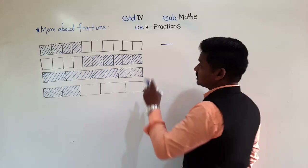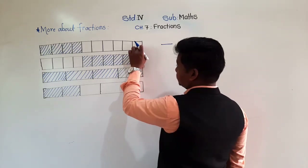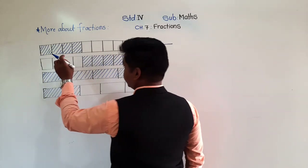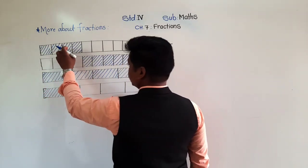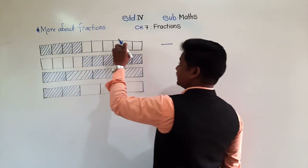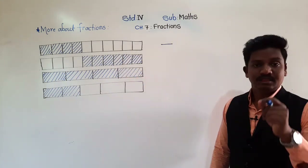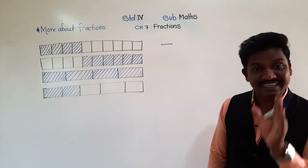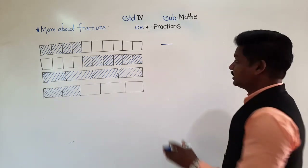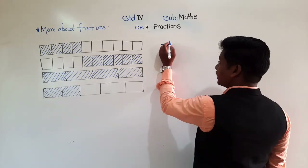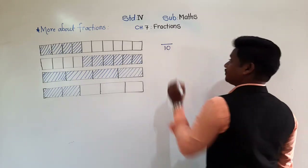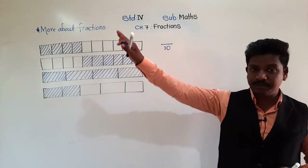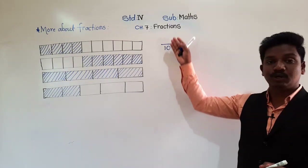First, count the total parts. In the first strip, the strip is divided into how many total parts? 1, 2, 3, 4, 5, 6, 7, 8, 9, and 10. The first strip is divided into 10 equal parts. So the total equal parts go right below the line — 10. There are 10 total equal parts, written below the line.